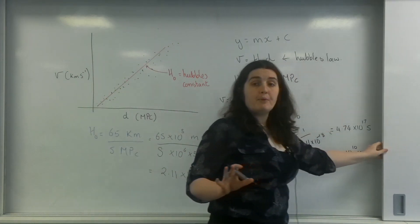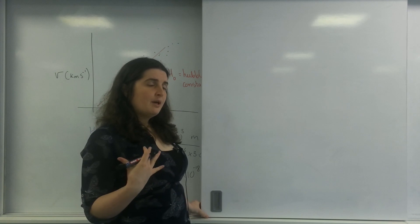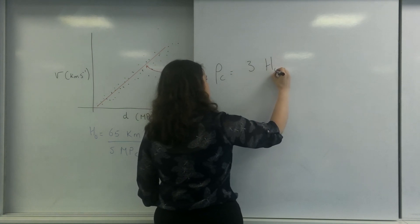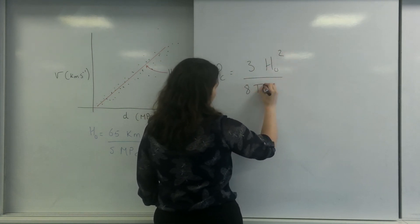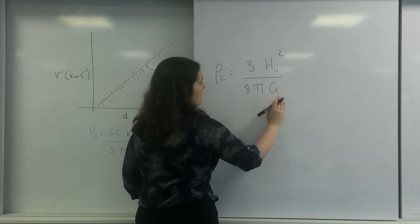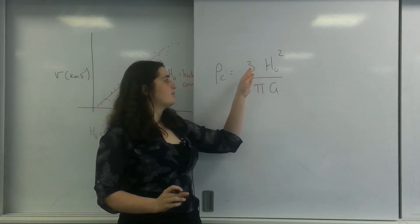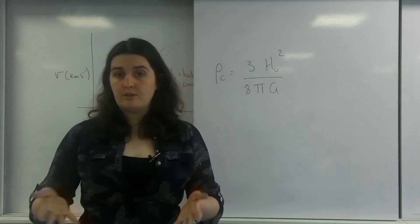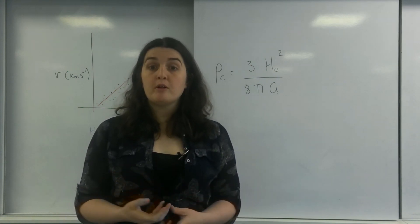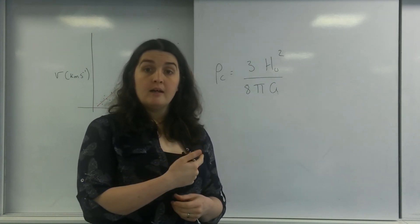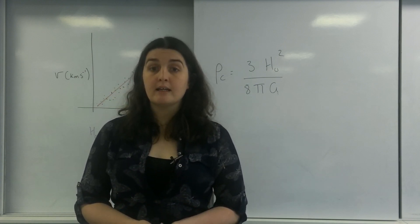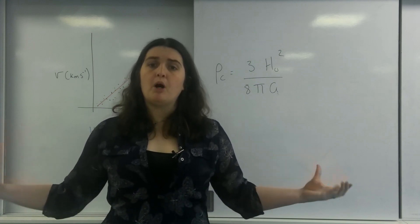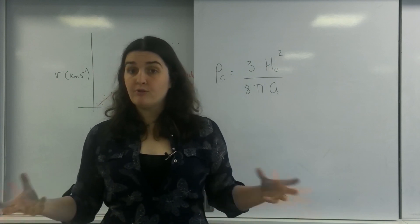This is not on the spec but may be asked as a practical question. The critical density formula involves the gravitational constant, Hubble's constant, and 3 over 8π. The critical density is about what the universe does: if the mass of the universe is bigger than the critical density, there will be too much gravitational pull — it will expand then pull back in, and that would be the Big Crunch.